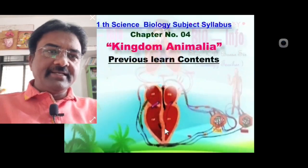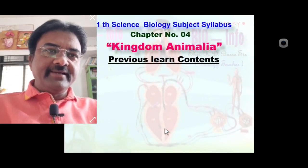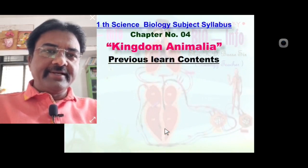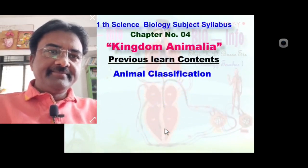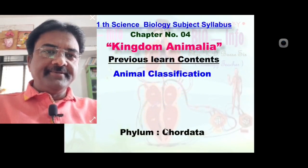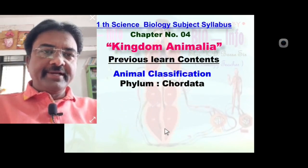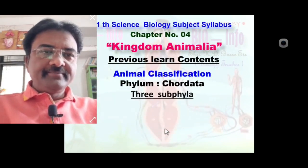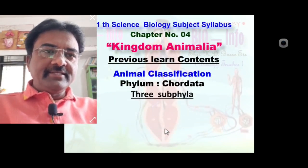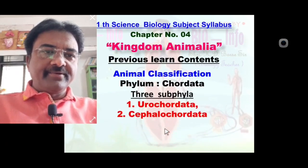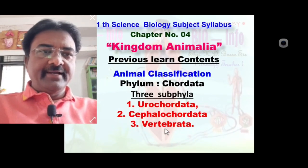In the last lecture, we detailed discussed Kingdom Animalia chapter, containing animal classification, phylum Chordata, and three sub-phyla: Urochordata, Cephalochordata, and Vertebrata.